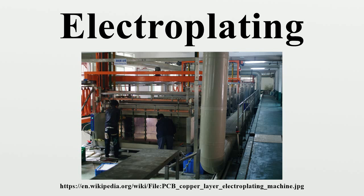A simple modification in the electroplating process is pulse electroplating. This process involves the swift alternating of the potential or current between two different values, resulting in a series of pulses of equal amplitude, duration, and polarity, separated by zero current. By changing the pulse amplitude and width, it is possible to change the deposited film's composition and thickness.